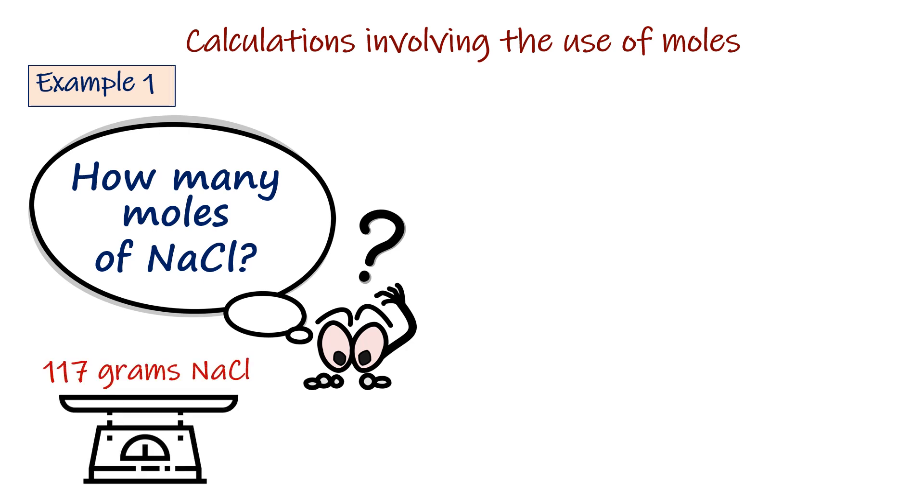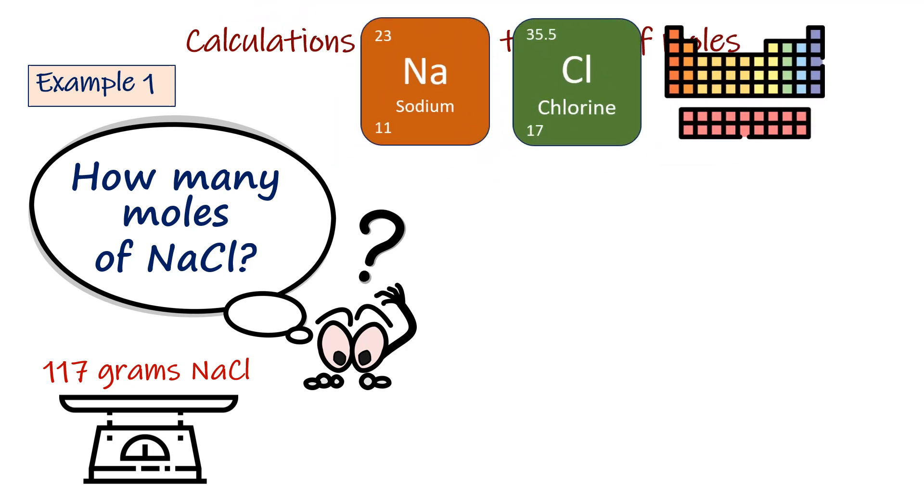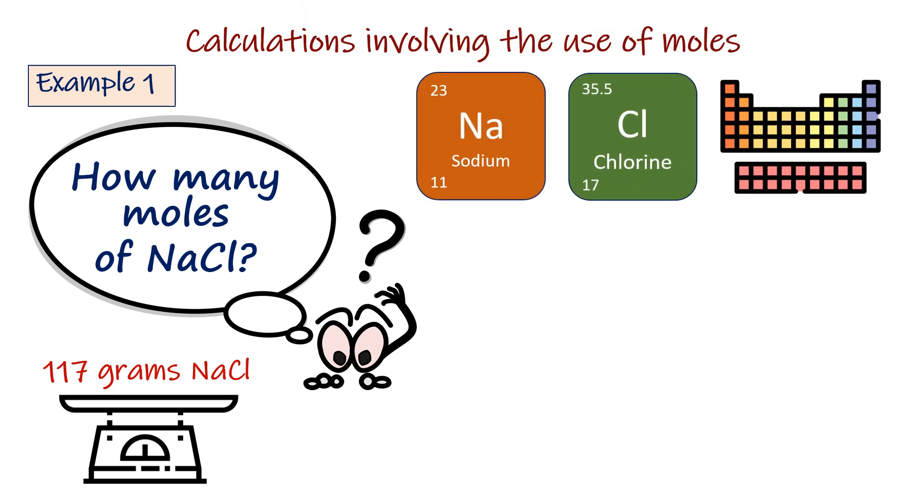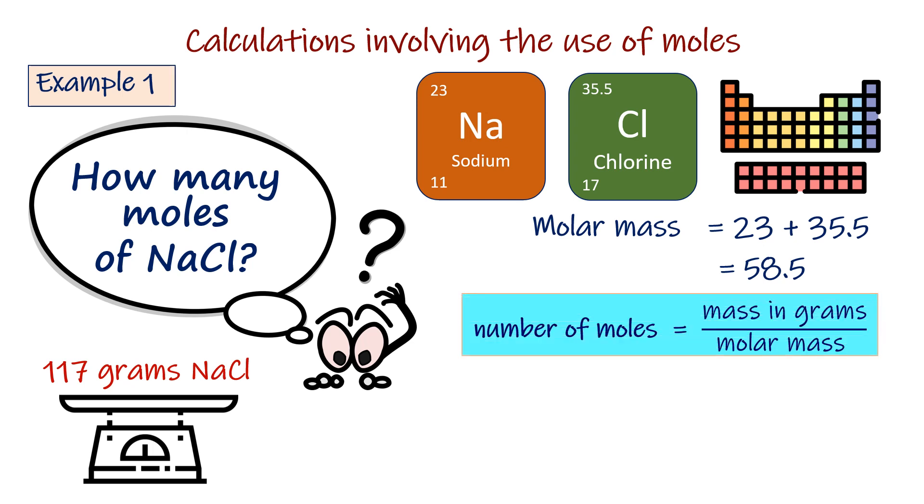To solve this problem first you need to calculate the molar mass of sodium chloride. Find the atomic masses of sodium and chlorine from your periodic table. The molar mass of sodium chloride is gonna be 23 plus 35.5 equals 58.5. Then divide the mass of sodium chloride by its molar mass to get the number of moles. The number of moles in 117 grams of sodium chloride is 2.